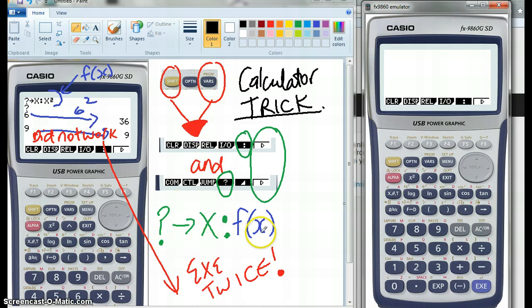So the thing you need to get into a calculator is question mark. And then the arrow is a button here. So the question mark, whatever you're going to input, goes to the x.